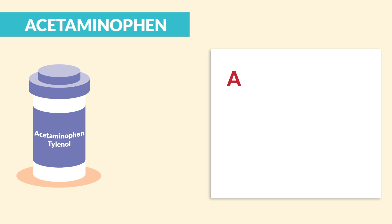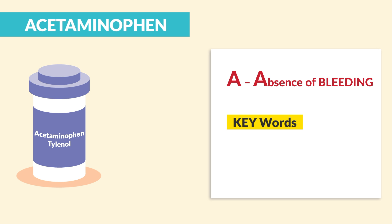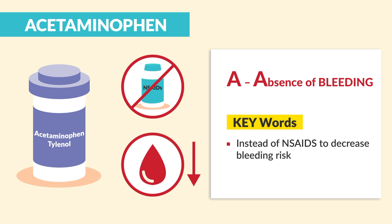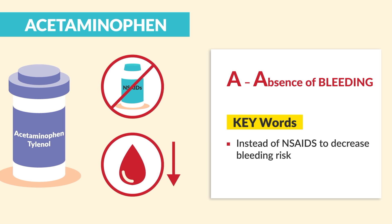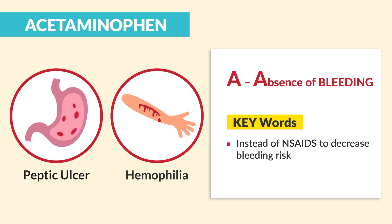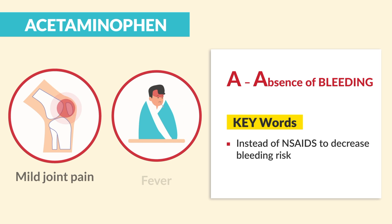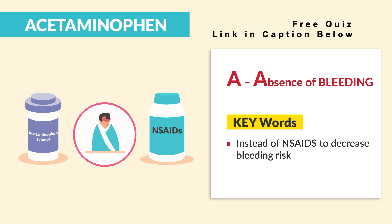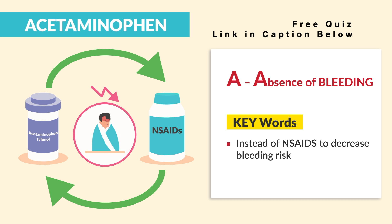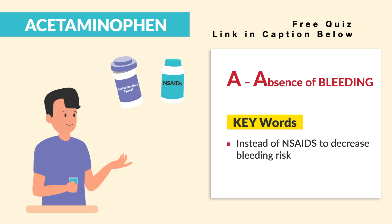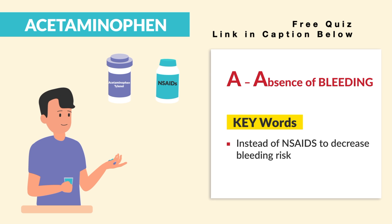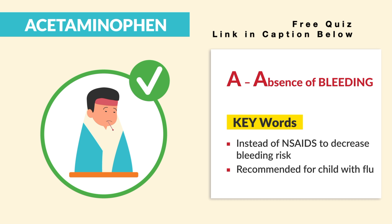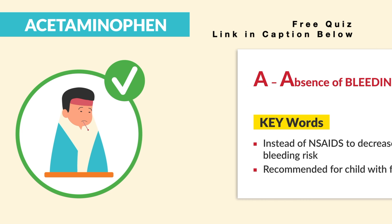Now, acetaminophen — brand name Tylenol. Remember the A's for acetaminophen. A is for absence of bleeding. The key word is that it's used instead of NSAIDs to decrease the bleed risk. Usually used for patients with a peptic ulcer or hemophilia for their mild joint pain or fever. Another plus is that Tylenol and NSAIDs can be used interchangeably to reduce a fever, so when you reach max dose on one, you can just use the other. Key word: it's recommended for a child with the flu.